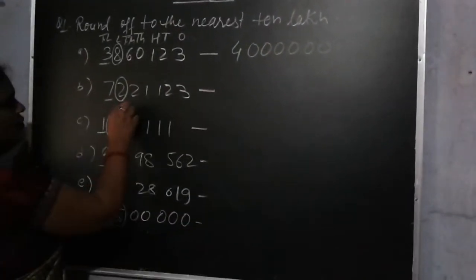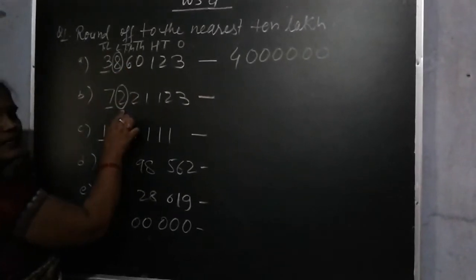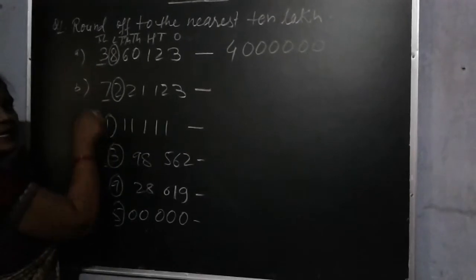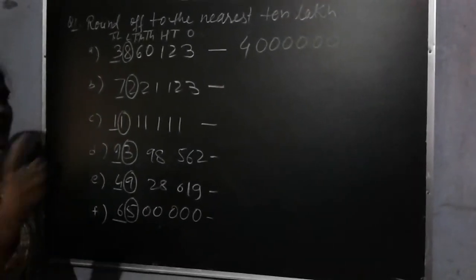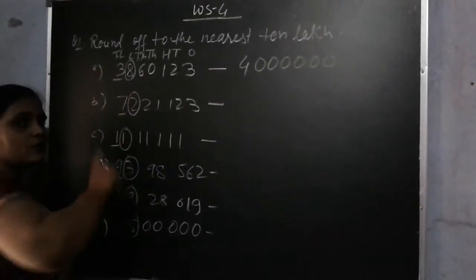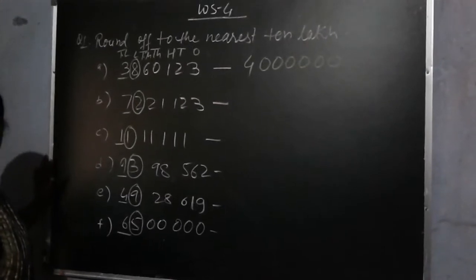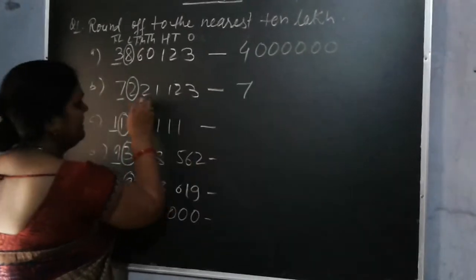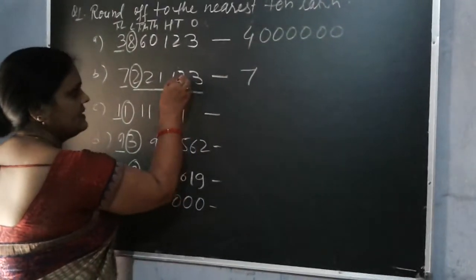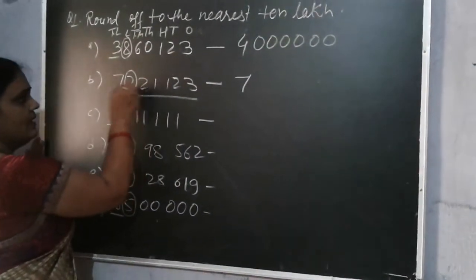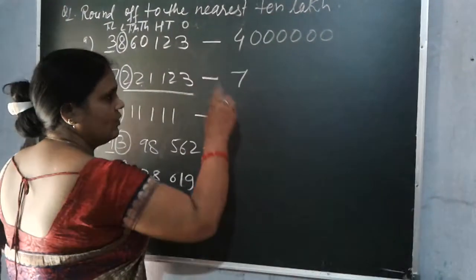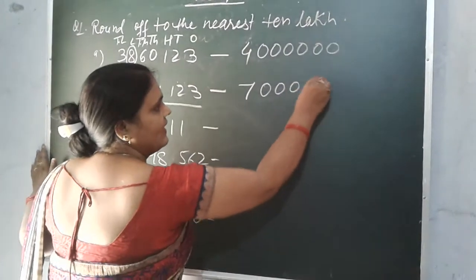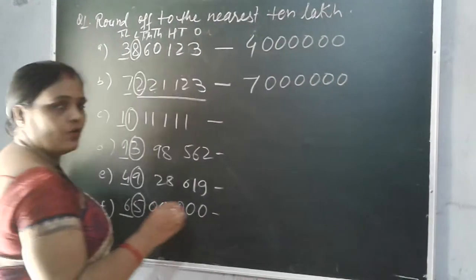Now next question. The digit 2 is on the lakh place. 2 is less than 5, so there are no changes on the 10 lakh digit. Same as it is, 7 is written. And on that place — 1, 10, 100, 1000, 10,000, lakh — there are 6 digits, so you put 6 zeros.